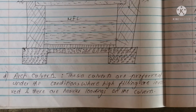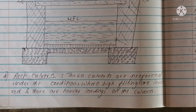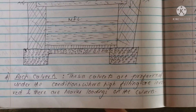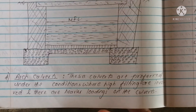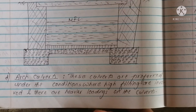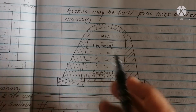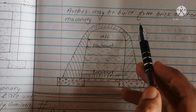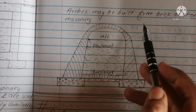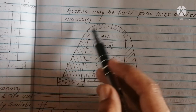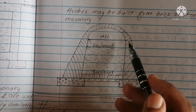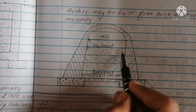If we want to build a bigger arch, we can build it with brick or stone masonry. If we want to build a stone masonry arch culvert, we can build the abutment wall accordingly. The arch culvert uses masonry construction for its structure.